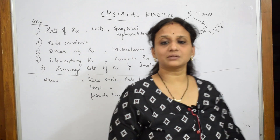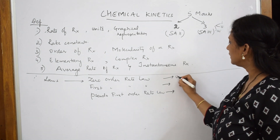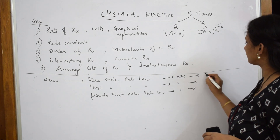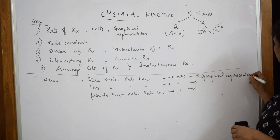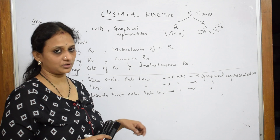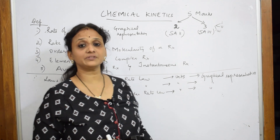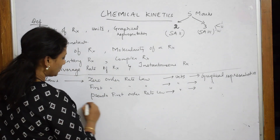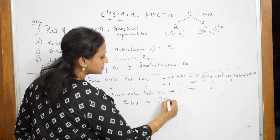All three rate laws are important for this chapter. Whenever you study an integrated equation for these rate laws, you must also study the units for all three. You should also get acquainted with the graphical representation of all three — this is where most students fall short. They may ask you to derive the rate law, give units, or identify from a graph whether it is zero order, first order, or pseudo first order. You don't have a second order derivation, but you do have numericals based on second order kinetics.